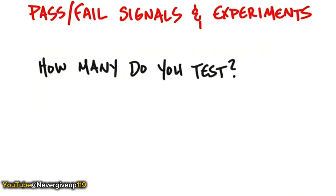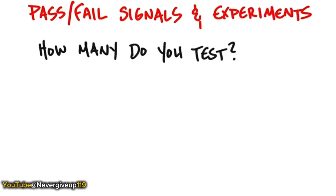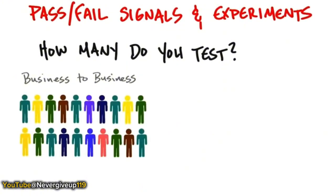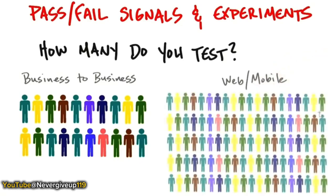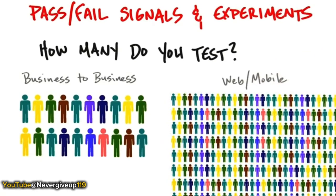The question of how many is classic, and the answer is it depends. In a business-to-business enterprise sale, you might get away with talking to fewer than 20 customers, and that's a great number. But if you have a mobile or web app, you want to talk to hundreds if not thousands of customers. You can't personally interview all of those, so you want to reach them virtually — but the number is an order of magnitude or two different than if you were doing B2B direct sales.